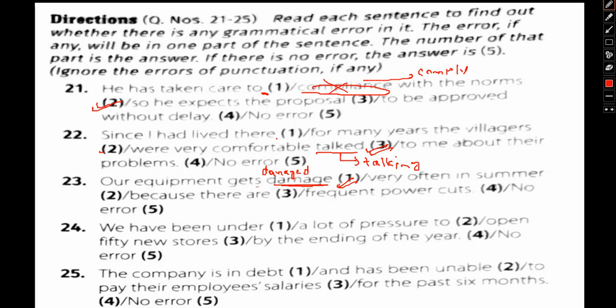Let's move to question number 24: We have been under (1) a lot of pressure (2) to open 50 new stores (3) by the end of the year (4) and no error (5). If we take a look at this, we have been under—the first part is all correct, no issues. A lot of pressure to, again it seems correct, there's no mistake. Open 50 new stores, correct.